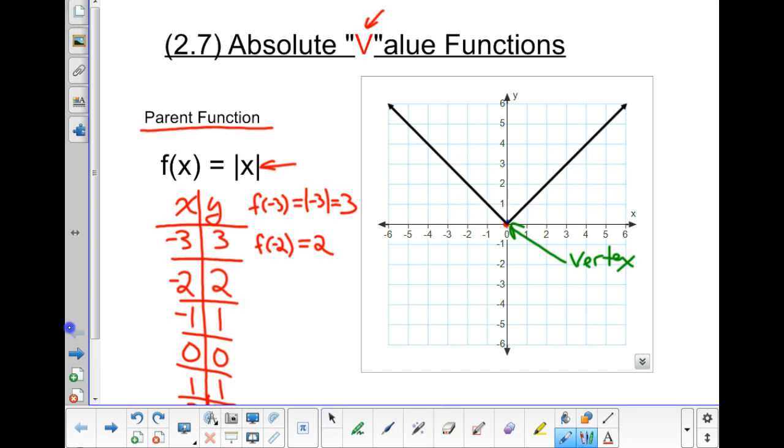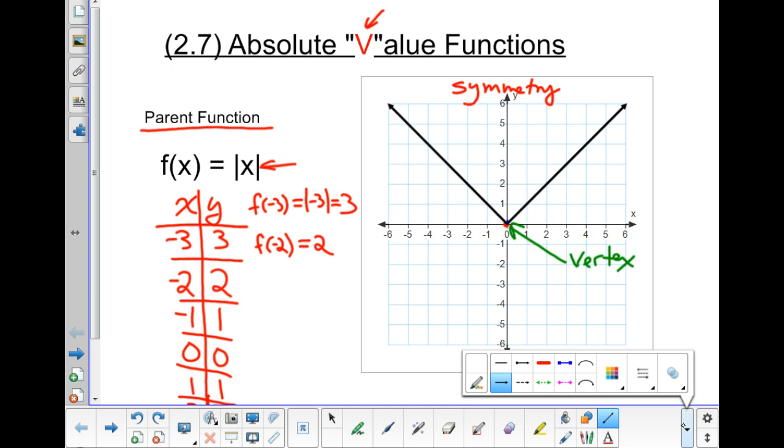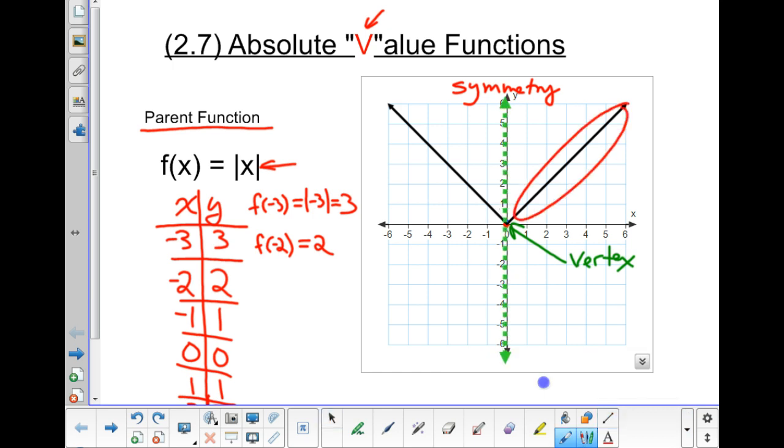Symmetry means that the right half of the graph looks identical to the left half of the graph. If I actually drew an imaginary line straight down the middle, I would see that this right half could fold directly over and match up with this left half, yeah? Well, every absolute value graph, or V, has to have symmetry, okay?